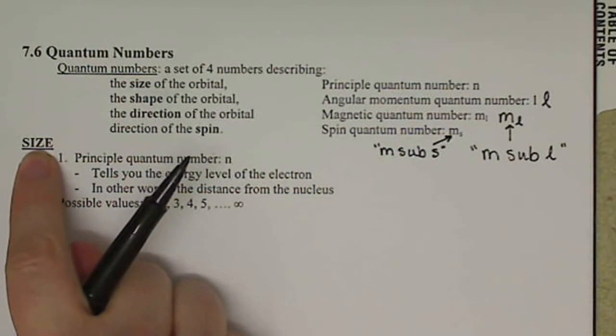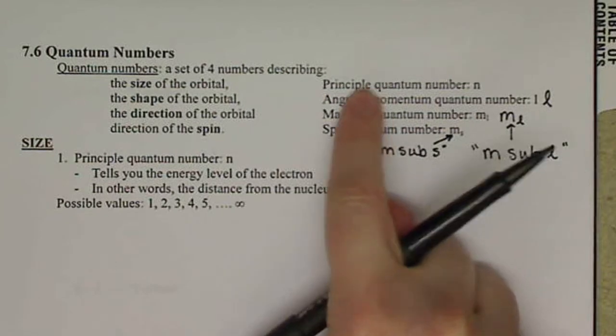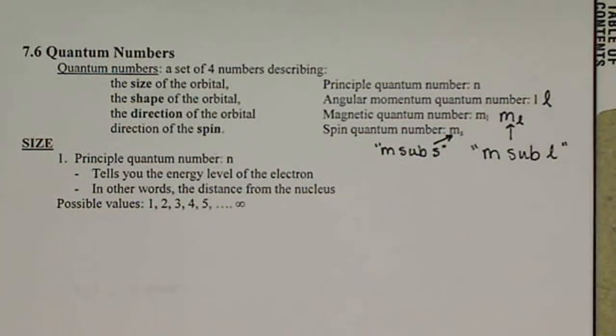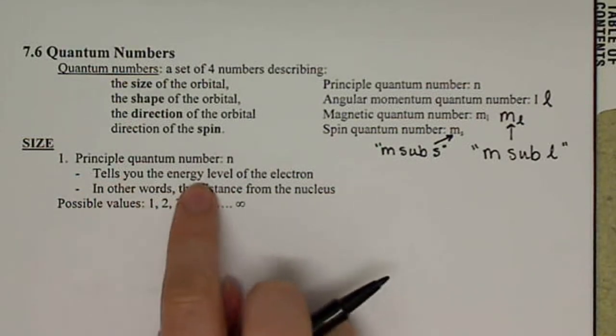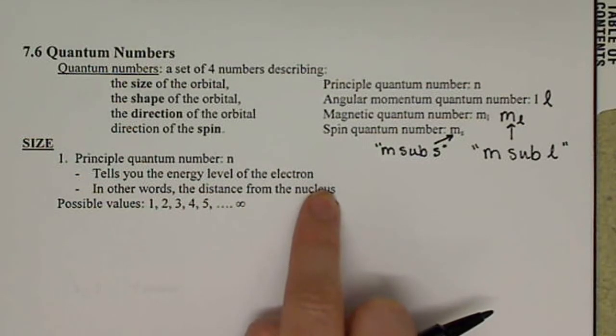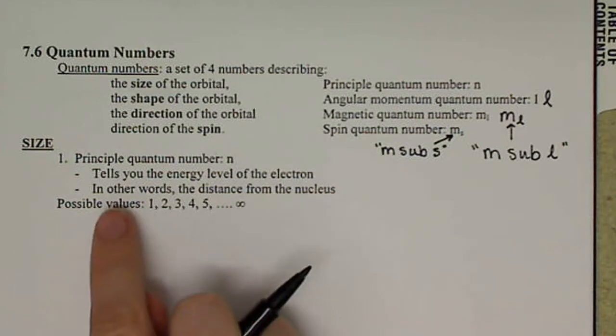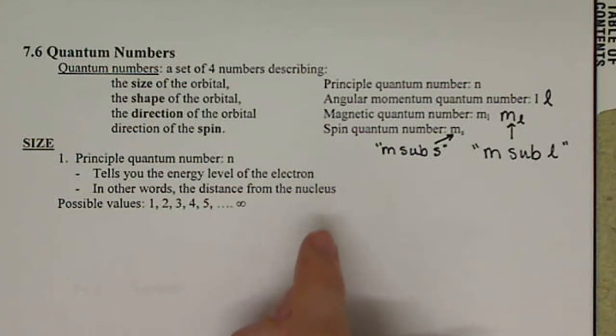Let's talk about the size of our orbital, and this is our principal quantum number. This is our n. Again, it's kind of like Bohr's atom. This tells us the energy level of the electron, in other words, it's the distance from the nucleus.